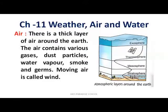हमारे Earth के चारों ओर एक thick layer of air है। Earth के चारों ओर एक atmosphere है, जो thick layer of air से बना हुआ है। इस air के अंदर अलग-अलग तरहाँ की gases हैं, dust particles हैं, water vapors हैं, smoke है, germs हैं। यह सब air का part हैं।